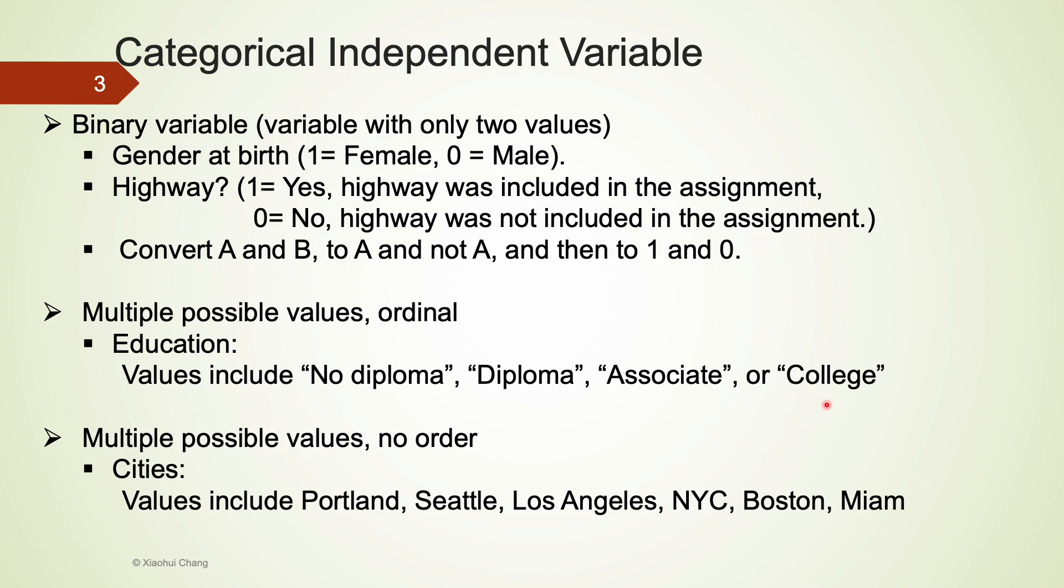For the no order group, one example is cities. The values include Portland, Seattle, Los Angeles, New York City, Boston, and Miami. There is no natural ordering in the cities. You could certainly sort the cities by their first letters, but there are other ways to do that. We don't have a preference for doing one way over the other.